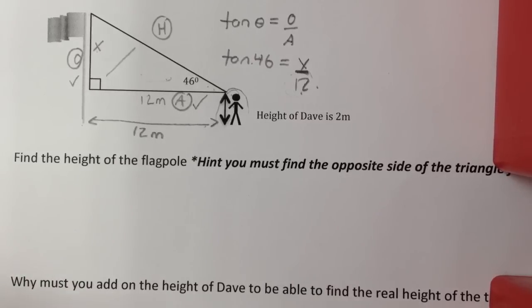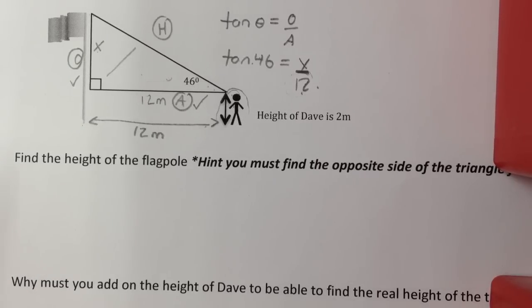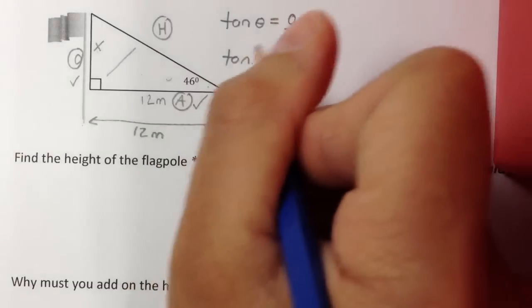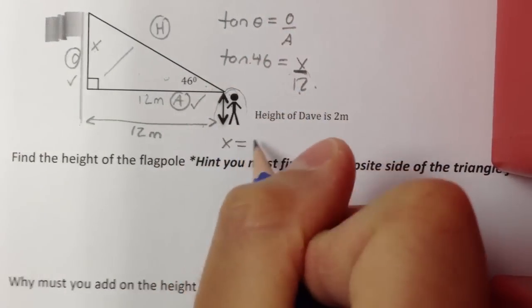So when I do that, I'm going to go tan 46 in my calculator. Hit equals. And times it by 12. And I get x equals 12.4.